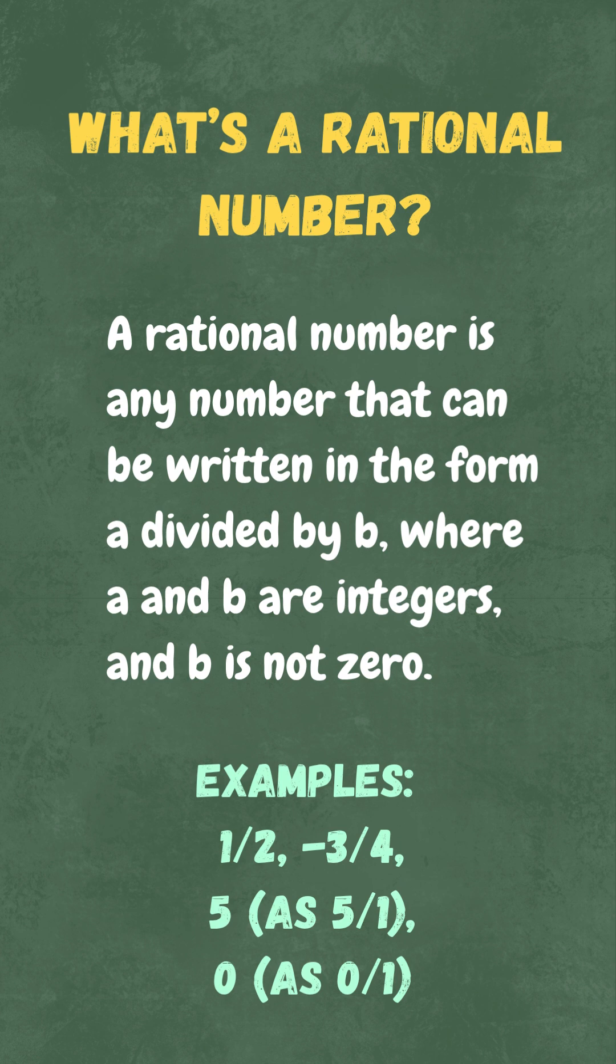What's a rational number? A rational number is any number that can be written in the form a divided by b, where a and b are integers and b is not 0.